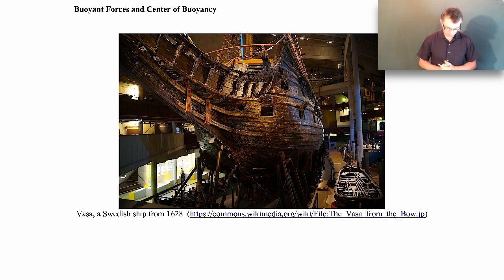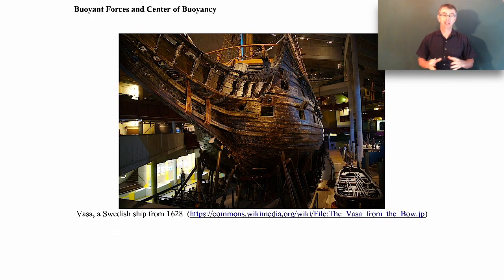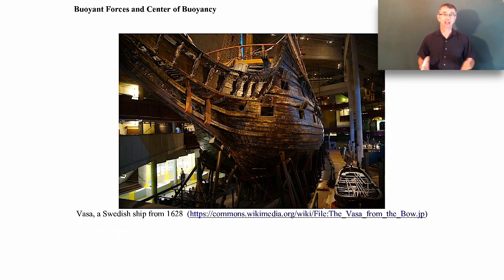If you look on your screen you'll see a picture of an old ship called the Vasa. It's a Swedish ship from 1628, so from quite a long time ago. It has a really interesting history. The king of Sweden wanted the ship built, and as it was being built the king had asked for additional features to be added on that weren't in the original design. Finally it was finished and it set sail in 1628, but it only made it something like 1400 yards before it tipped over and sank.